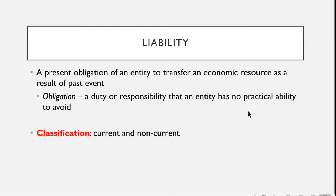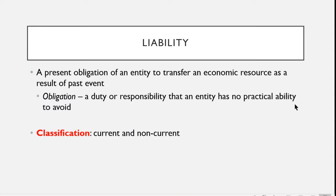Then we have the liability. So we have the economic resource controlled by the entity. This one is an obligation wherein we're going to transfer an economic resource as a result of a past event. If you can recall, obligation is a duty or responsibility that an entity has no practical ability to avoid.